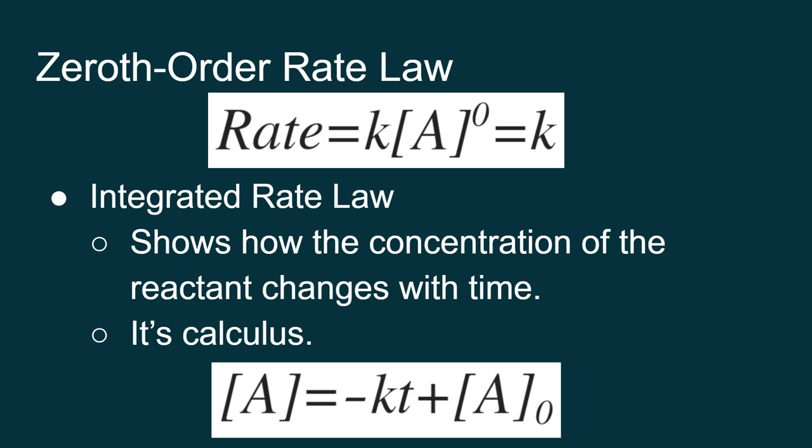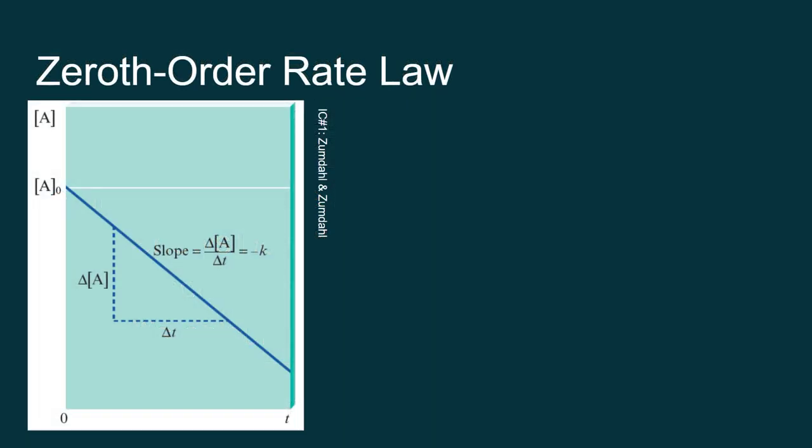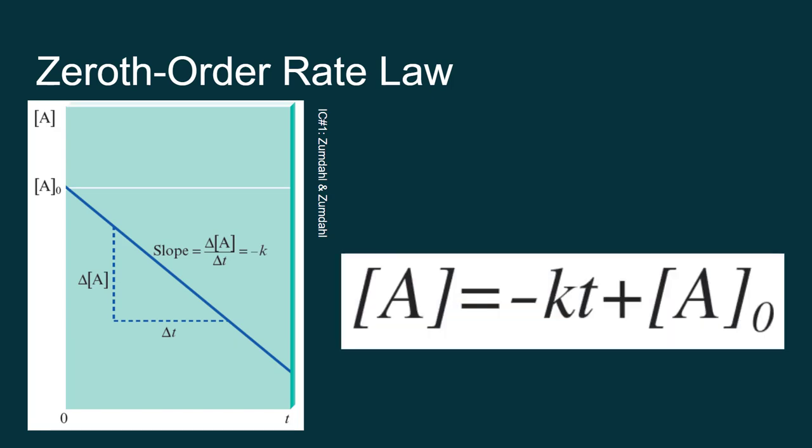For those of you that have taken physics, you're used to this notation. The equation is written this way because it is the equation of a line — y equals mx plus b — where if you put concentration on your y-axis and time on your x-axis, your slope will be the negative value of your rate constant and your y-intercept will be your initial concentration. So graphing concentration with respect to time gives a straight line whose slope is the negative rate constant.